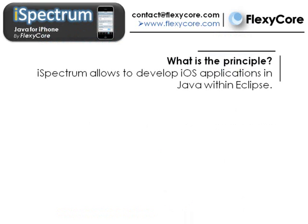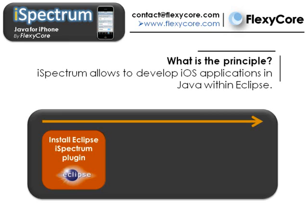What is the principle behind iSpectrum? iSpectrum is a compiler that allows you to develop native iOS apps in Java. You just have to install the iSpectrum plugin in your Eclipse.